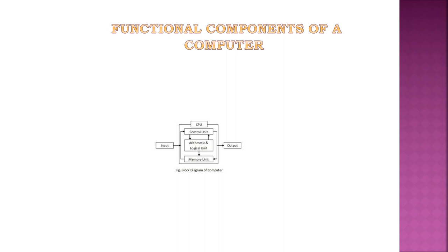A block diagram of a computer displays the structural representation of a computer system and gives a quick overview of the working process. There are three major units: Input, CPU, and Output. The CPU consists of a Control Unit, Arithmetic and Logical Unit, and Memory Unit. From the next slides we will see the working of each of these three units separately.